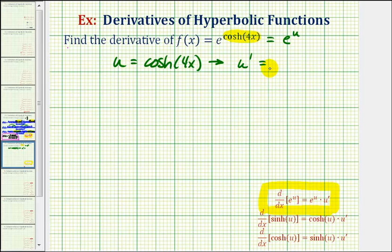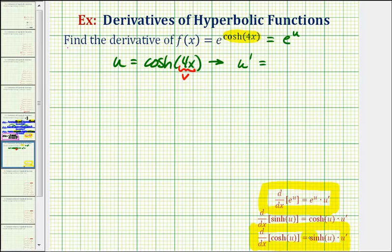What's a little tricky is that u is also a composite function, so we'll have to apply the chain rule again to find u prime. For u, the inner function is 4x and the hyperbolic cosine function is the outer function. We can let the inner function 4x be equal to v, and then find the derivative of hyperbolic cosine of v using the appropriate formula. Our derivative would be hyperbolic sine of v times v prime, which gives us hyperbolic sine of 4x times the derivative of 4x, which is four.